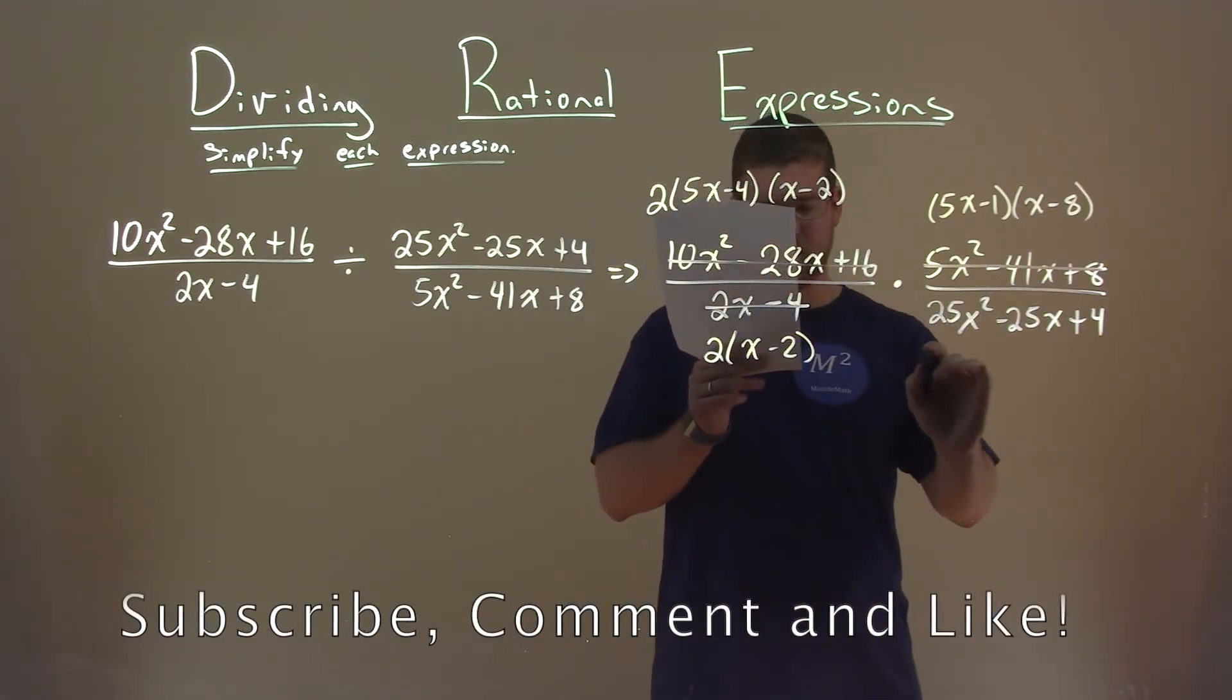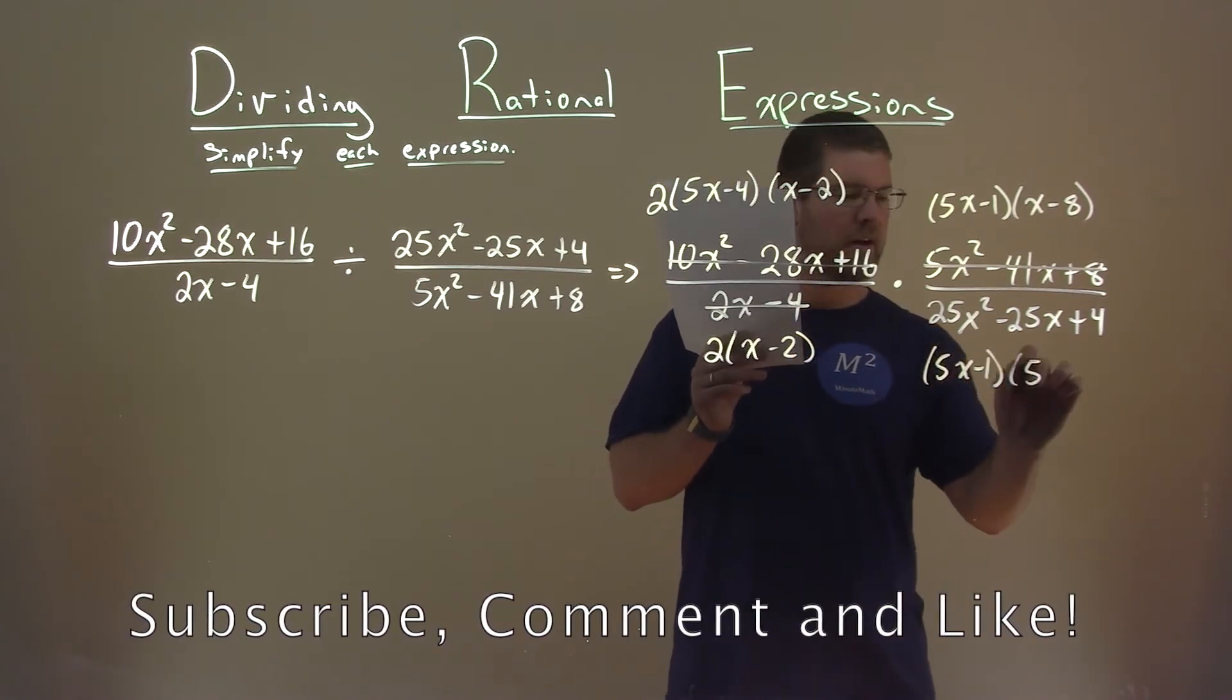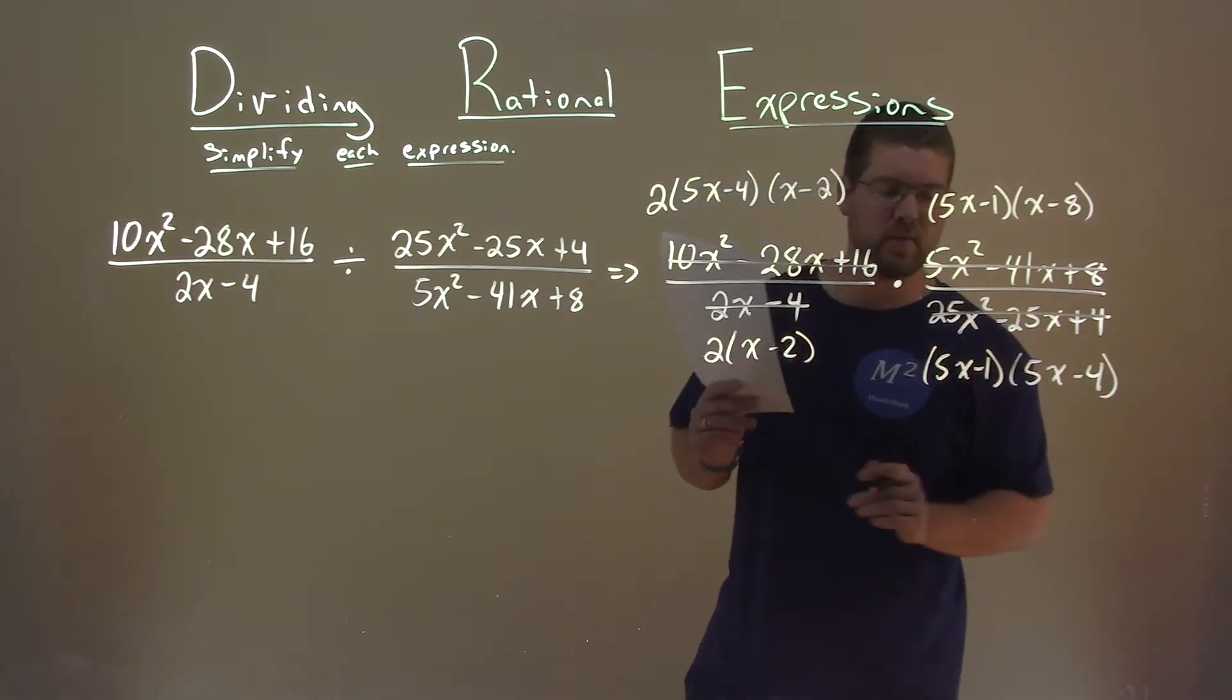And again, we're going to do the same thing down here. That in factored form is 5x minus 1, and 5x minus 4. We're replacing that as well.